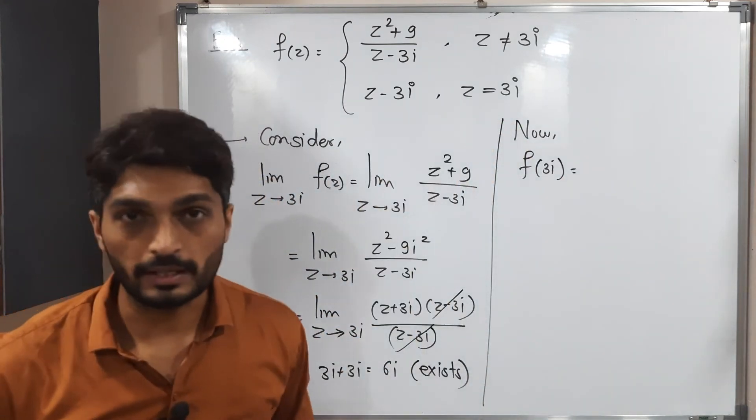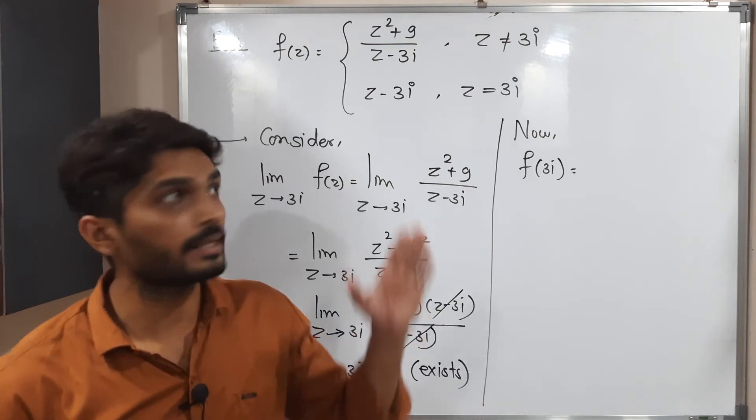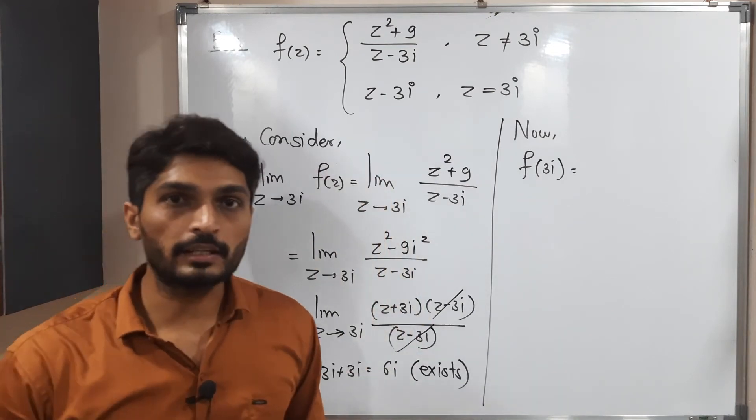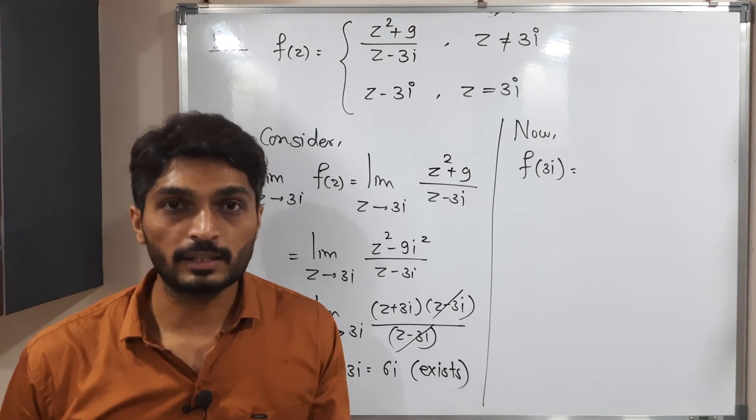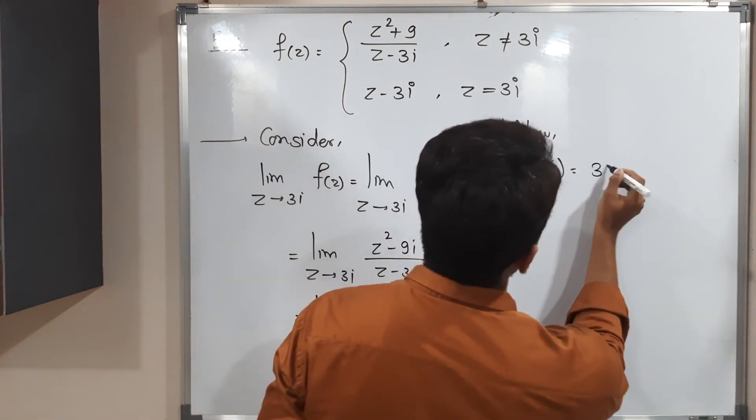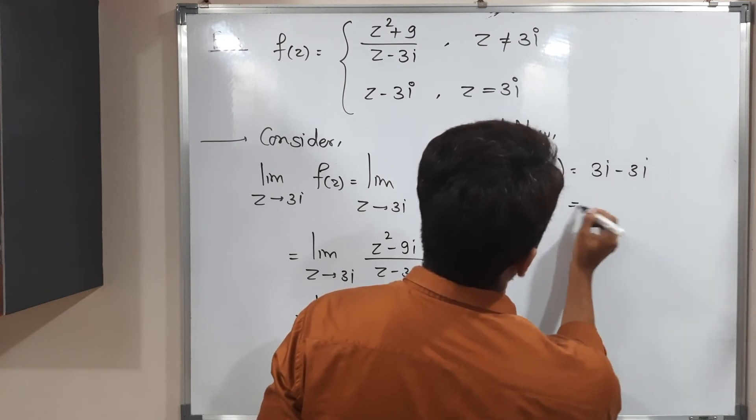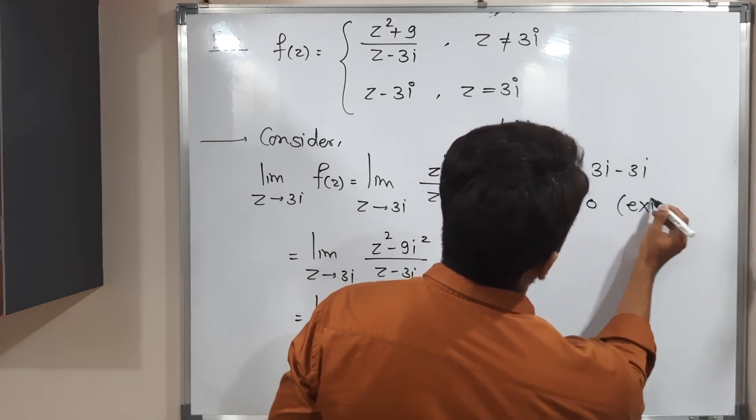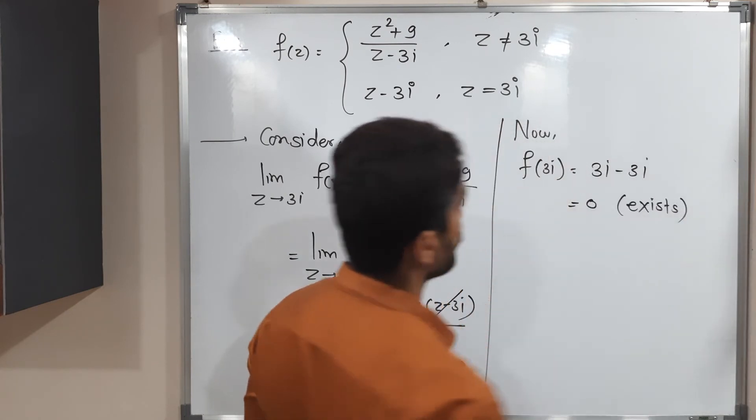f of 3i, that means basically z is equal to 3i. So that means we need to follow the second definition. So in second definition, z minus 3i is there. We need to put z is equal to 3i since its value is 3i. So 3i minus 3i, its value is 0. So that f of 3i, that also exists.